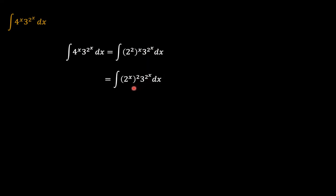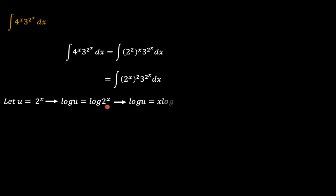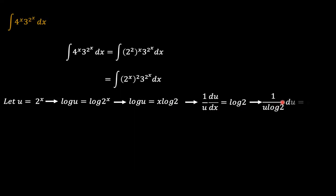Now we see common things, and with integration, when you see common things, it's usually common practice to substitute them with a simpler variable. So we let u be equal to 2 to the power x, such that the natural logarithm of u equals x times natural logarithm of 2. We can now differentiate this, giving 1 over u · du/dx equals natural logarithm of 2, so 1 over u·log2 · du can be substituted in place of dx.